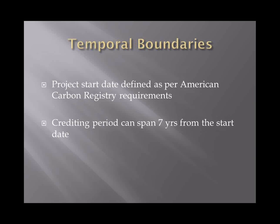We've got some temporal boundaries. The project start dates follow American Carbon Registry's own requirements. From the period that the project is eligible, there's a period of seven years. That's the period under which the project is able to receive credit, as long as they meet the verification requirements based against the protocol. It isn't an indefinite period, but seven years provides some certainty, and that's a programmatic choice within American Carbon Registry.